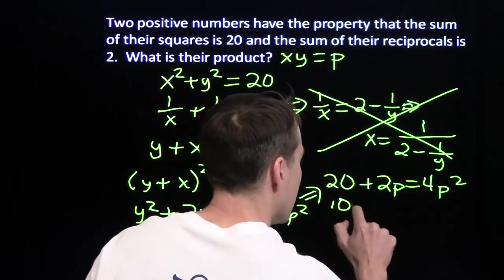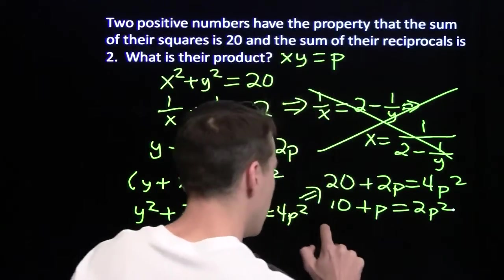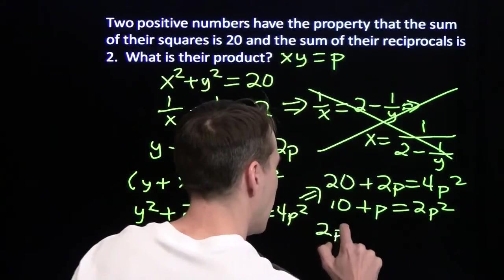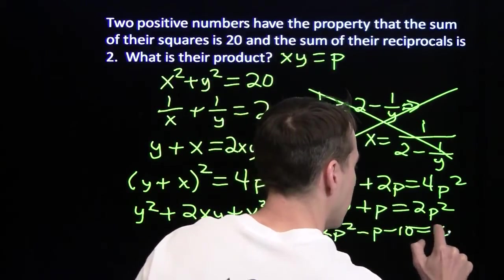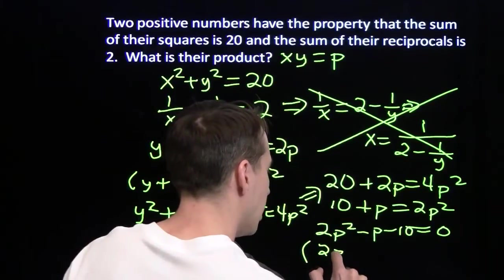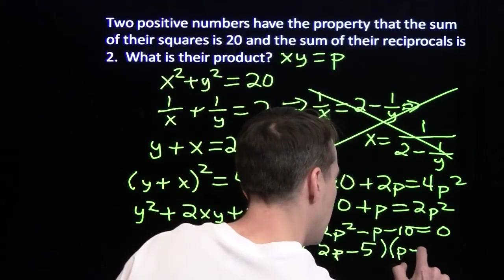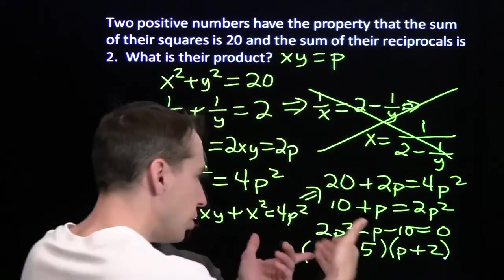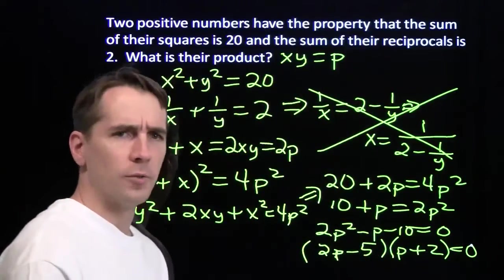Divide both sides by 2, I get 10 plus p equals 2p squared. A little rearranging here, and I'll have a quadratic. And now I factor. I'm going to get 2p minus 5 times p plus 2 is factoring that quadratic. Now, that gives me two possibilities for p.